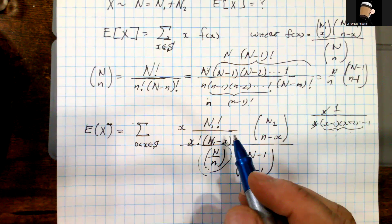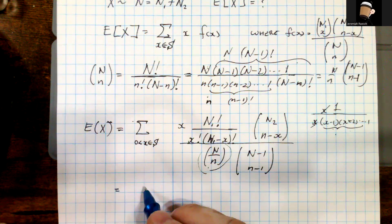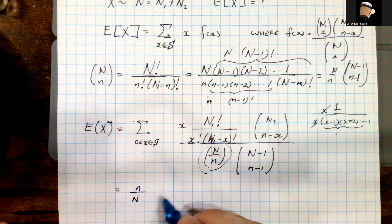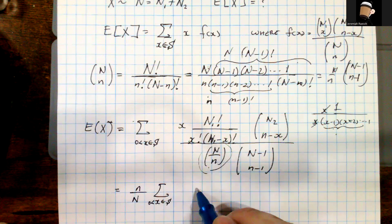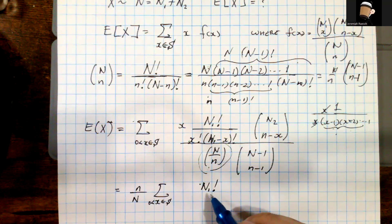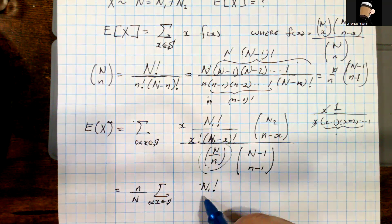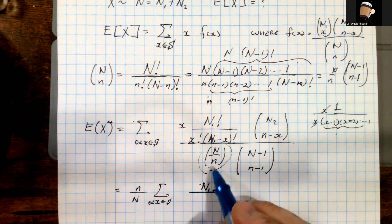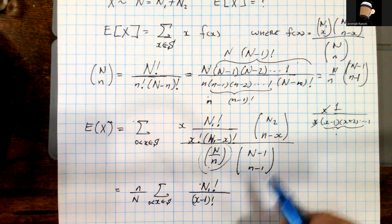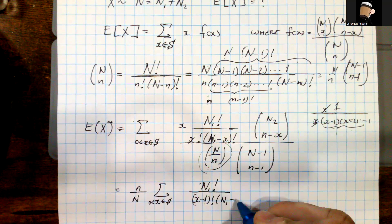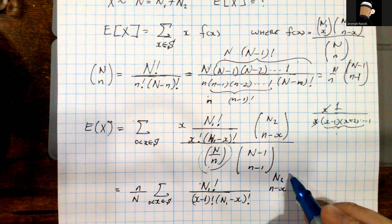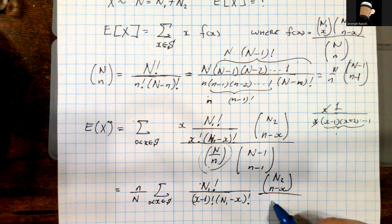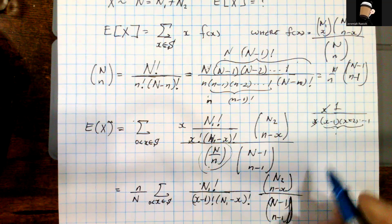Let's rewrite and gather our terms. We're going to have N/n out front, then the sum for x greater than 0 in S. We have n1! over (x−1)!·(n1−x)!, then times (n2 choose n−x), all over (N−1 choose n−1). We can write n1! as n1·(n1−1)!, and that n1 is a constant with respect to the sum, so we can factor it out.